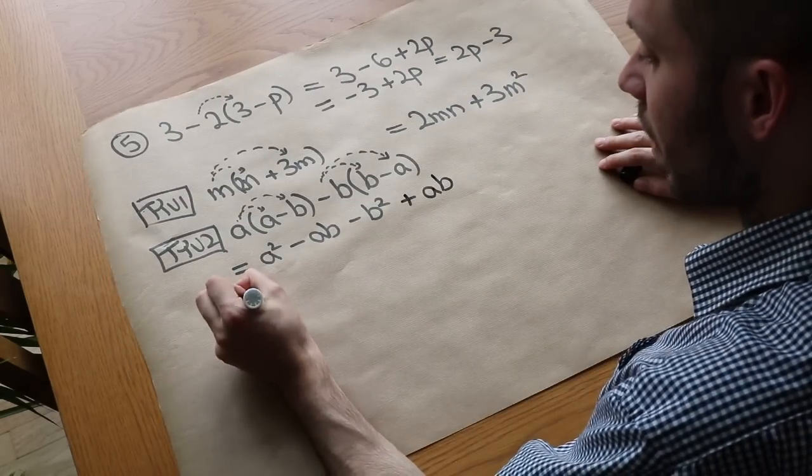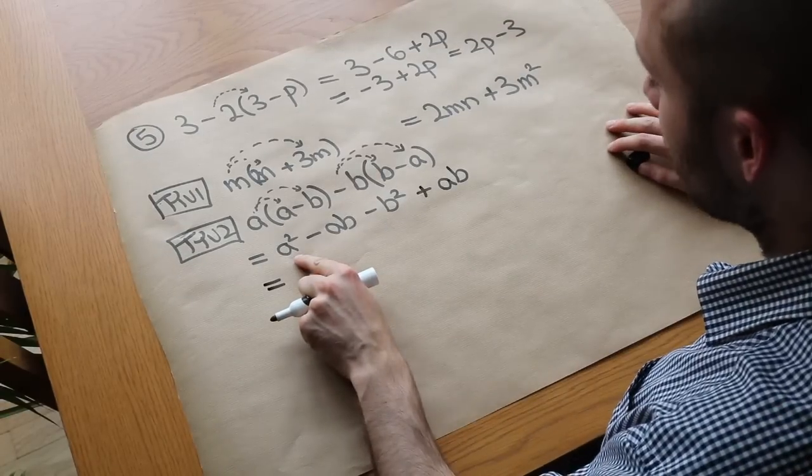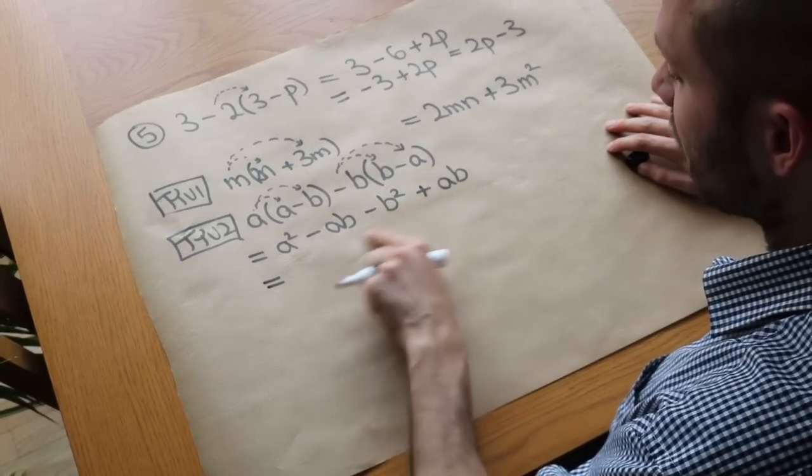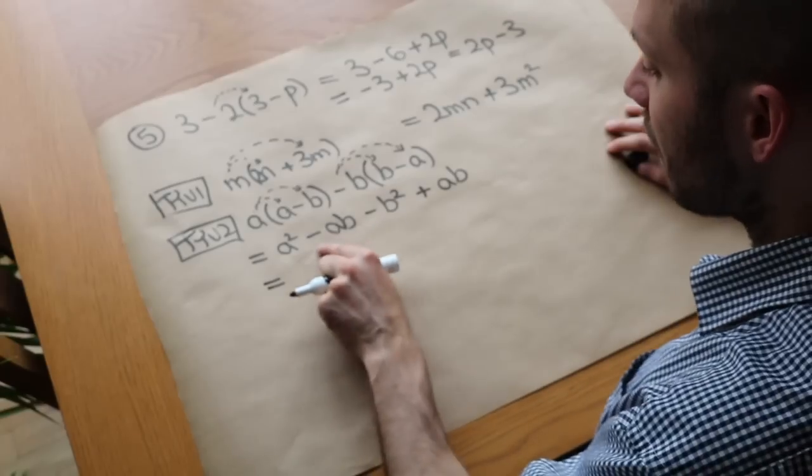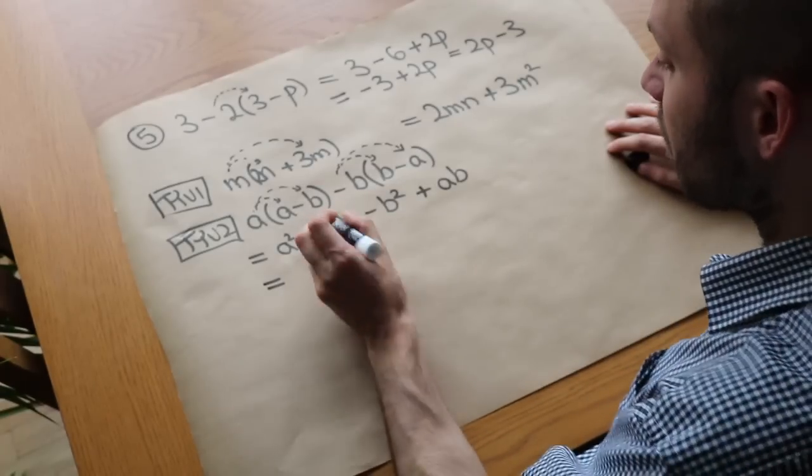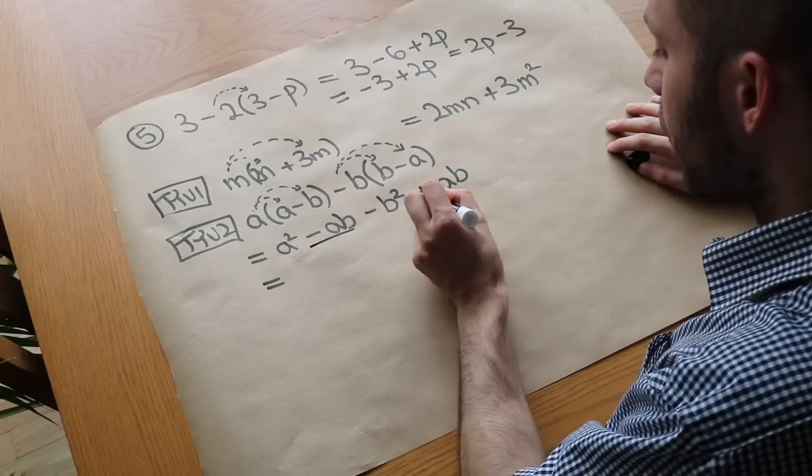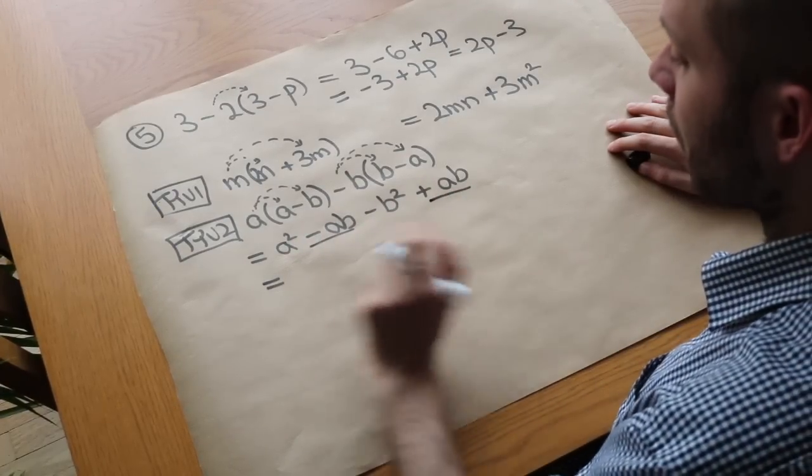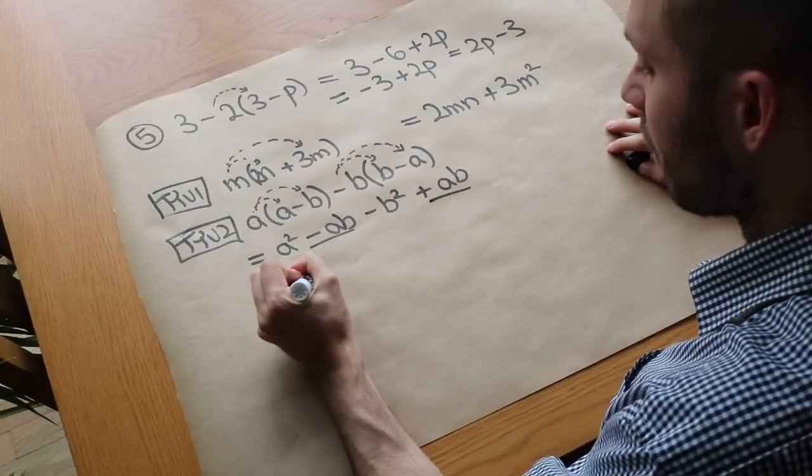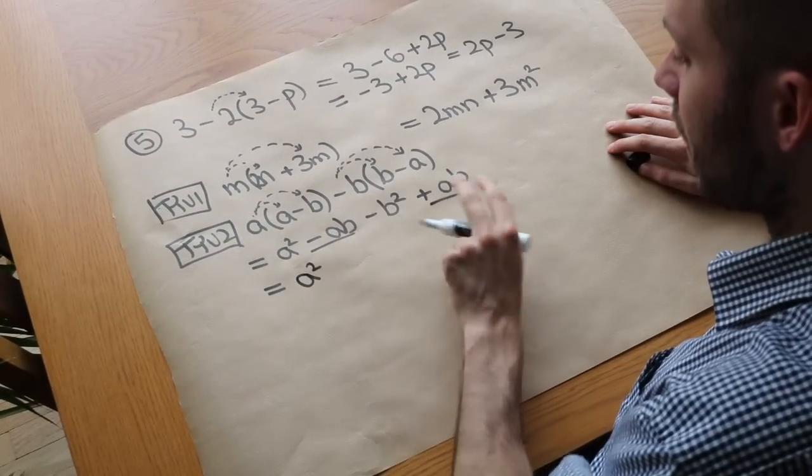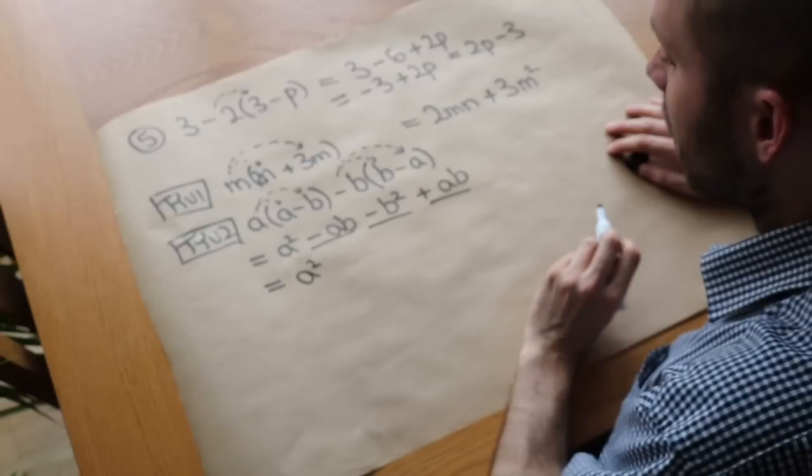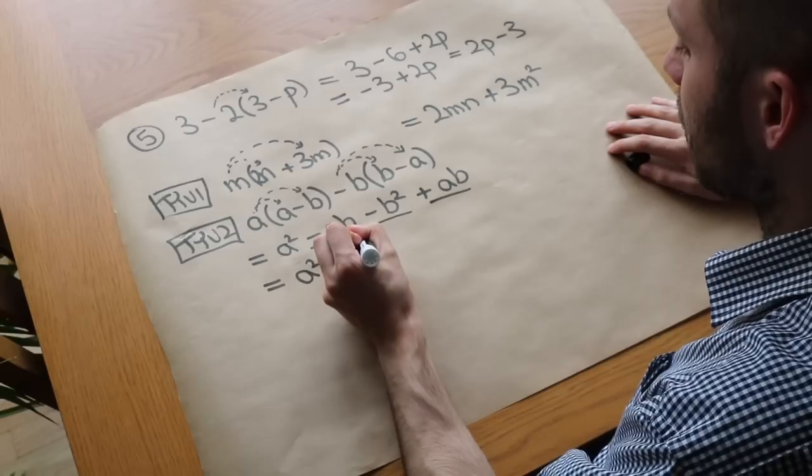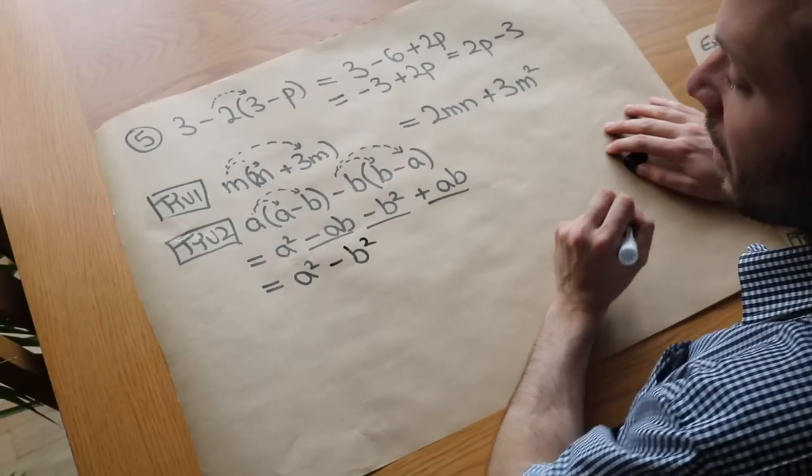And finally, let's see if we can collect any like terms. Can this a squared be collected with anything else? Well, no. There's nothing else which has just an a squared in it. Can we collect this minus ab with anything else? Yes, we can. And we can see that minus ab plus ab, well, they just cancel out. So that just disappears. So we've got the a squared so far. That just disappears. And then we've finally got this minus b squared. And that doesn't collect with anything else because there's nothing else with just b squared in it. So we get a squared minus b squared.